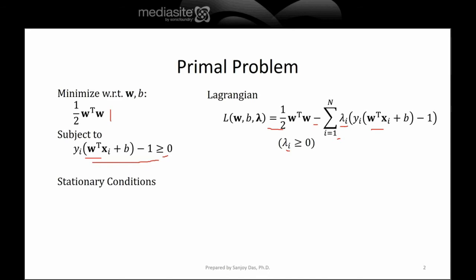Let's take the derivatives to construct the stationary conditions. The derivative of the Lagrangian with respect to B: we have Lambda_i Y_i multiplied by B inside the summation, so the derivative with respect to B will be negative of summation Lambda_i Y_i, which equals 0. This implies that summation Lambda_i Y_i equals 0.